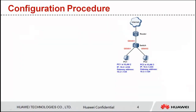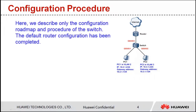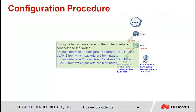Let's see the configuration roadmap and procedure. Here we describe only the configuration roadmap and procedure of the switch; the default router configuration has been completed. Configure 2 subinterfaces on the router interface connected to the switch. For subinterface 1, configure IP address 10.2.1.1 and VLAN 2 from which packets are terminated. For subinterface 2, configure IP address 10.3.1.1 and VLAN 3 from which packets are terminated.